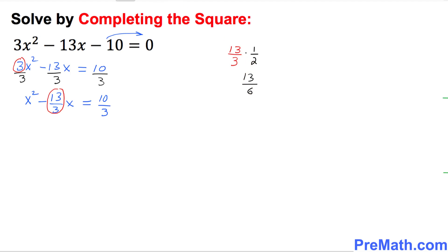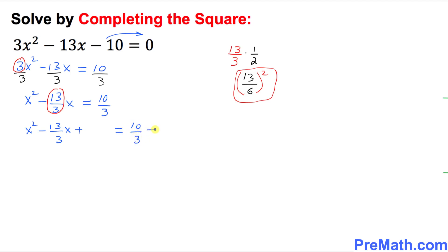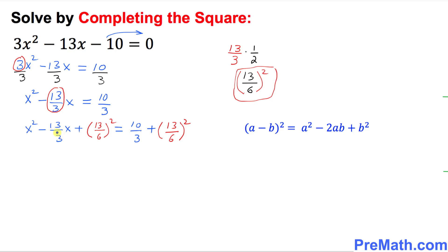The final step is to take whatever quantity we got and square it. We're going to add this squared value to both sides of the equation. So we write x squared minus 13/3 x plus (13/6)² equals 10/3 plus (13/6)².